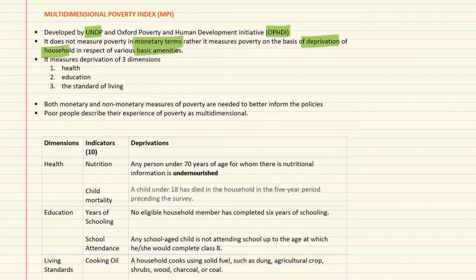We have poverty estimates like the Ranga Rajan Committee, Tendulkar Committee, or World Bank International Poverty Line. They were all somewhere based solely on monetary value.